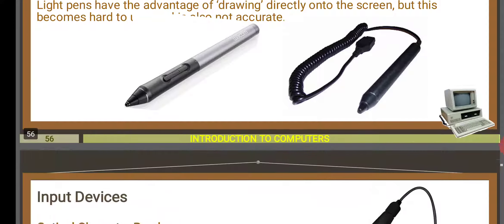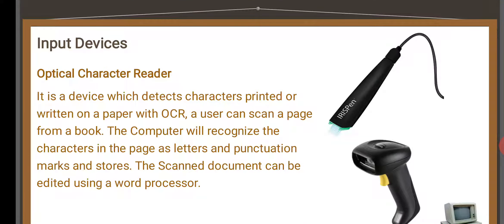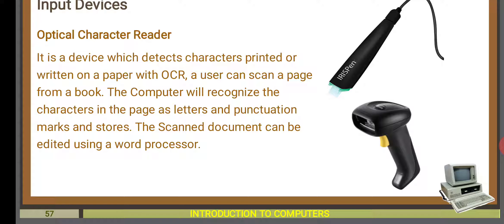The next input device is the Optical Character Reader (OCR). It is a device which detects characters — letters printed or written on paper. With OCR, a user can scan a page from a book. The computer recognizes the characters in the page as letters and punctuation marks and stores them. The scanned document can then be edited using a word processor.